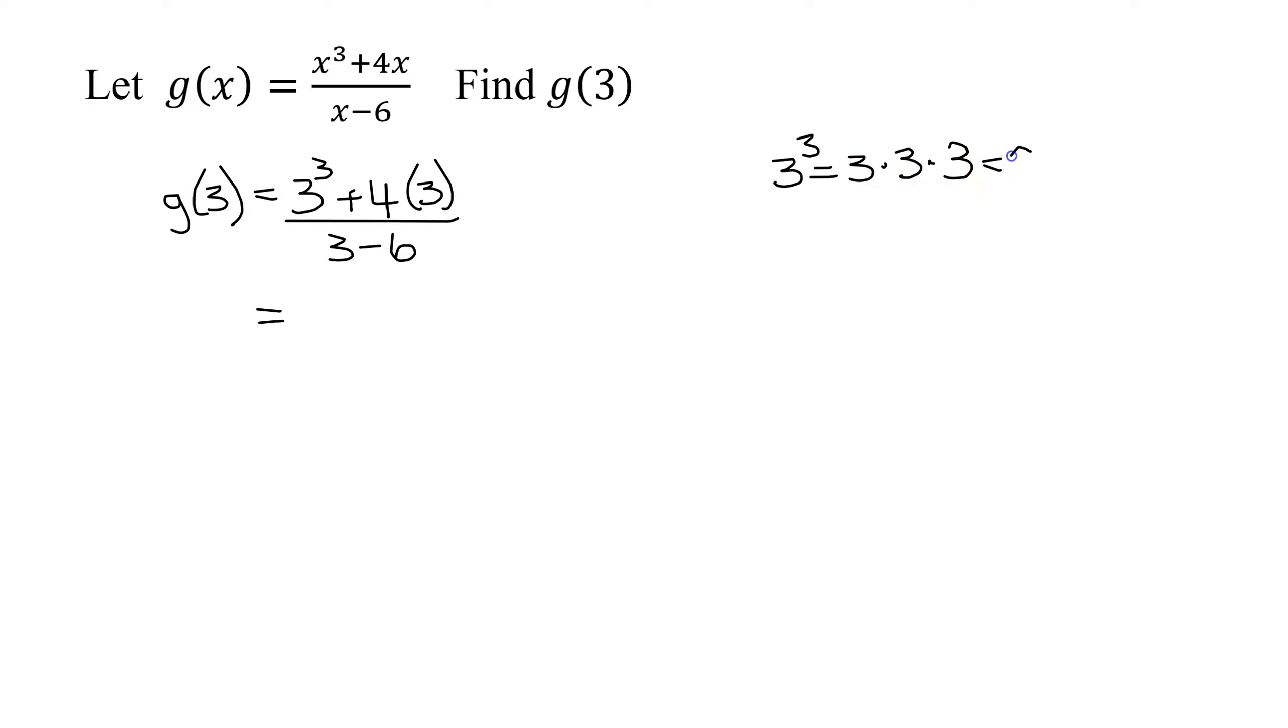9 times 3 is 27. So I'm going to get 27 plus 4 times 3 over 3 minus 6 is negative 3. So my numerator becomes 27 plus 4 times 3 is 12,